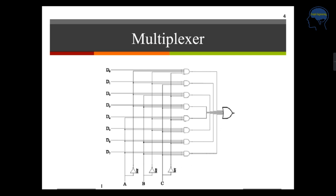So if you have an 8-to-1 multiplexer, there are D0 to D7 — 8 inputs in total. In different combinations — 0, 0, 0 through 1, 1, 1 — that gives values 0, 1, 2, 3, 4, 5, 6, and 7.